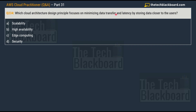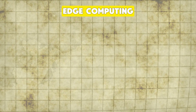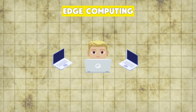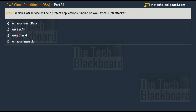Question number 234: which cloud architecture design principle focuses on minimizing data transfers and latency by storing data closer to the users? Options are: option A, scalability; option B, high availability; option C, edge computing; and option D, security. The correct answer is option C, edge computing. Edge computing involves processing data closer to the user at the network edge rather than in a centralized data center. This reduces data transfer and latency, enabling faster response times, better user experience, and efficient utilization of network bandwidth.